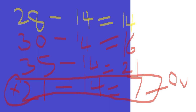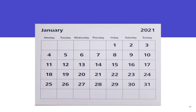Now let us go to our calendar and demonstrate this so that you will understand. The first example is a 30-day cycle. If you subtract 14 from 30, you get 16.